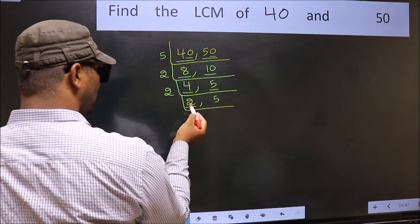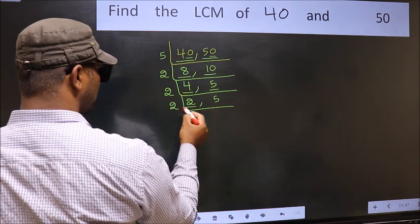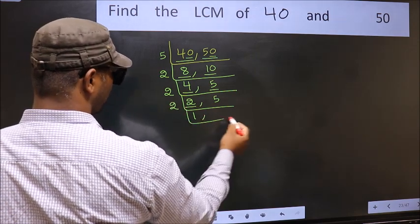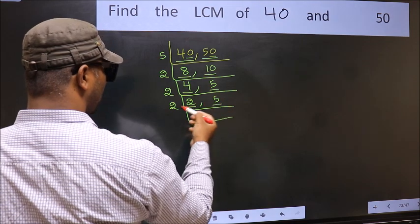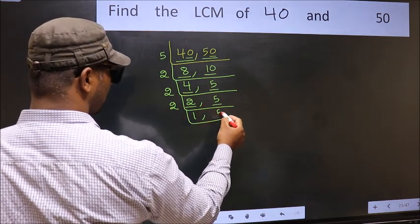Now we have 2 here. 2 is a prime number, so 2 once is 2. The other number 5, not divisible by 2, so we write it down as it is.